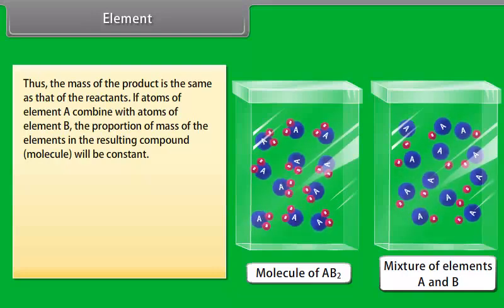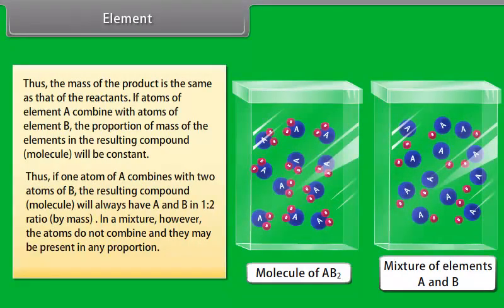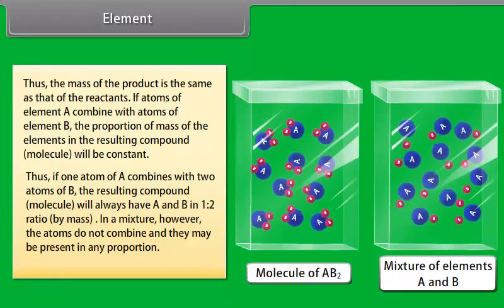Heterogeneous mixtures are made up of more than one phase and they can be separated physically. A chocolate chip cookie, a tossed salad, sand, and a bowl of raisin bran cereal are all examples of obvious heterogeneous mixtures.